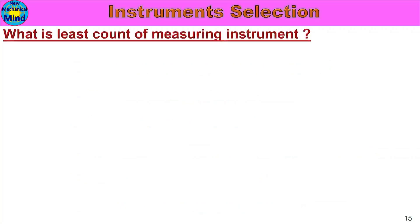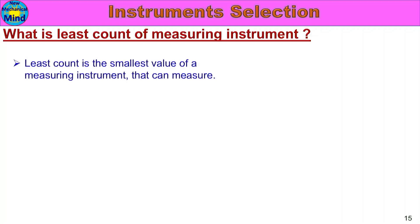First, what is least count of a measuring instrument? The least count is the smallest value that a measuring instrument can measure. When we use one instrument, the smallest value we can measure is called the least count.